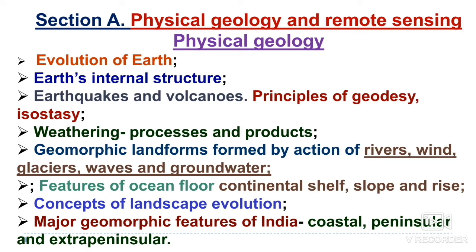Firstly we will discuss in detail the syllabus — what are the key topics from your exam point of view. Section A consists of physical geology and remote sensing. In physical geology, the topics include evolution of the earth — how the earth has evolved, the nebular theory or the nebular hypothesis, and other hypotheses.